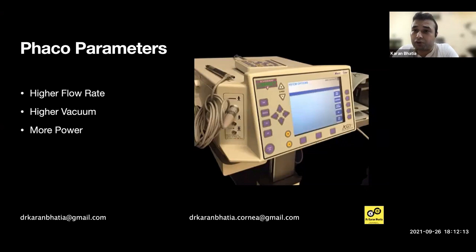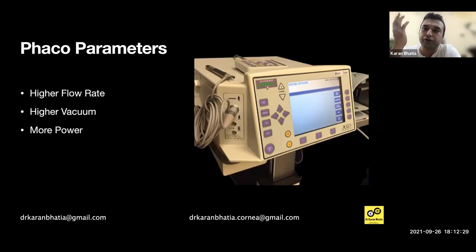Remember: if there is any pushing effect on the lens during trenching, that means your power is insufficient and you need to increase it. Any pushing effect can compromise the zonules. When trenching, around 40-60 vacuum is enough — you don't need much vacuum for trenching or chopping. Higher vacuum is important during the chopping/emulsification phase where you want to hold the nucleus.